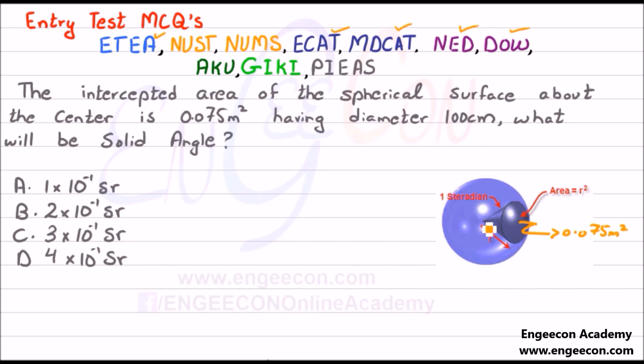The diameter is equal to 100 cm. As I explained in my previous lectures, solid angle is equal to this area divided by r².